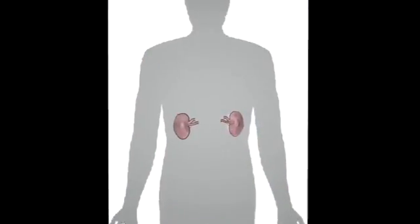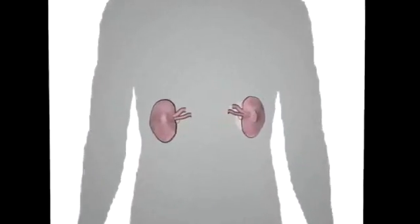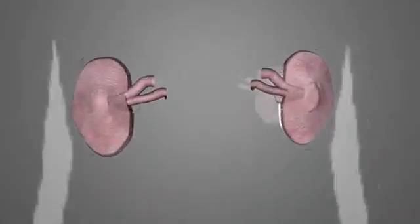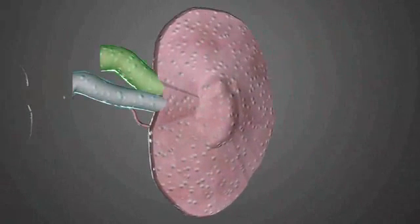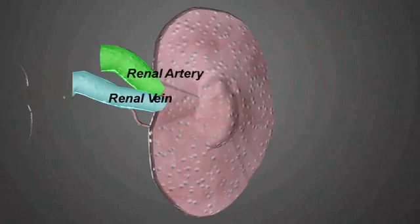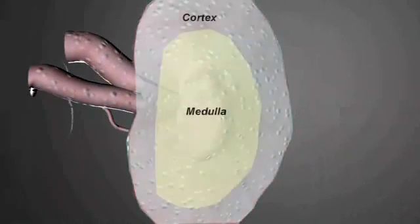As everyone knows, we have two kidneys, each functioning independently. Diuretic action occurs in the kidney. This is where the body controls filtration, reabsorption, and excretion of water, small molecules, and ions such as sodium and potassium. The outer layer of the kidney is called the cortex. The inner layer is the medulla.